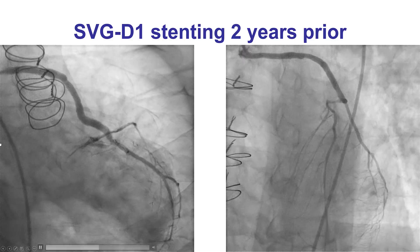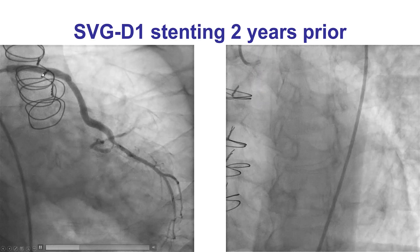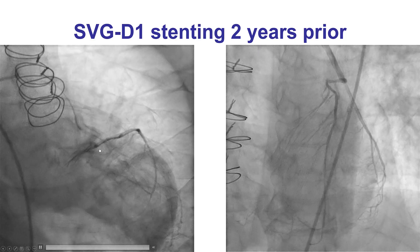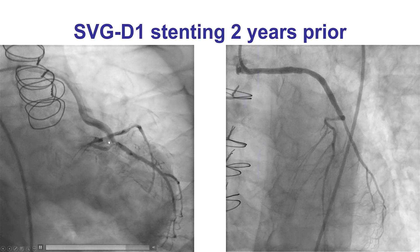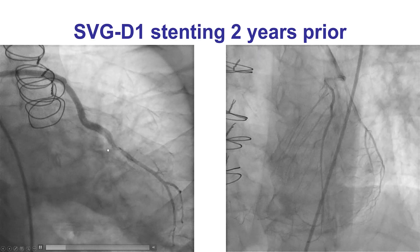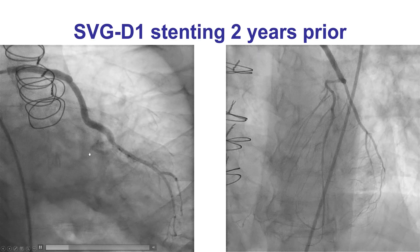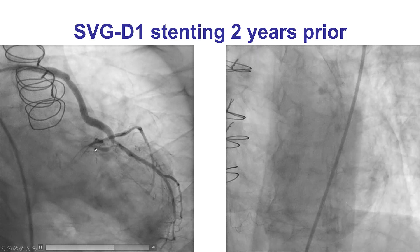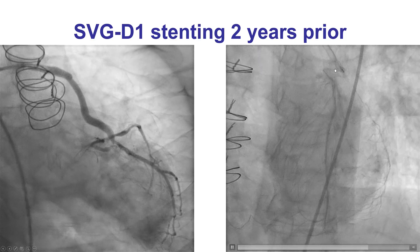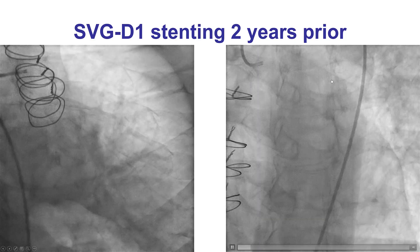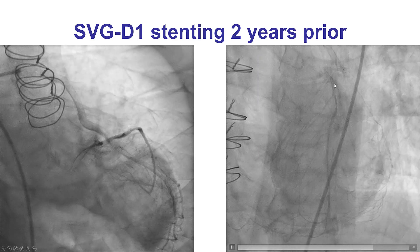This is the angiogram from two years prior. The vein graft was supplying the diagonal branch and also the left anterior descending artery. There was a significant lesion in the diagonal at the distal anastomosis, proximal to the touchdown, affecting filling of the LAD. This was successfully treated with a drug-eluting stent placed from the SVG all the way into the proximal segment of the diagonal branch.